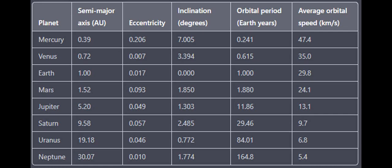Here is a table with the orbital data of the eight planets in our solar system. These values are approximate and can vary slightly depending on the method used to measure them and other factors such as gravitational interactions with other celestial bodies.